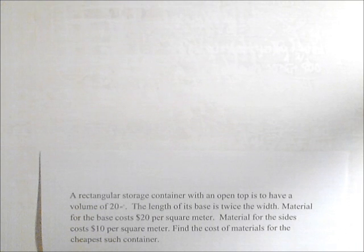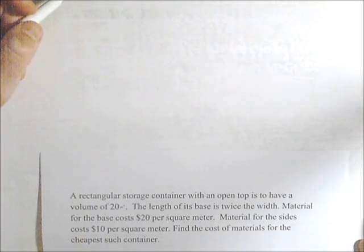We have an optimization problem here. We have a rectangular storage container with an open top that has a volume of 20 meters cubed. The length of its base is twice the width. The material for the base costs $20 per square meter. Material for the sides costs $10 per square meter. We want to find the cheapest such container.